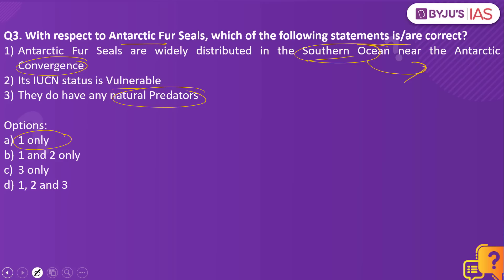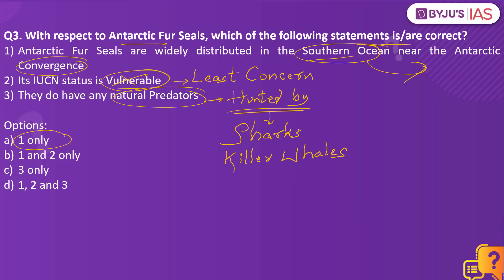Statement two — that the IUCN status is vulnerable — is wrong; the Antarctic fur seal's IUCN status is actually least concerned. Statement three is also wrong because they are hunted by sharks and killer whales. Regarding diet, about 95% of their diet consists of krill; they also feed on squid and occasionally on penguins.